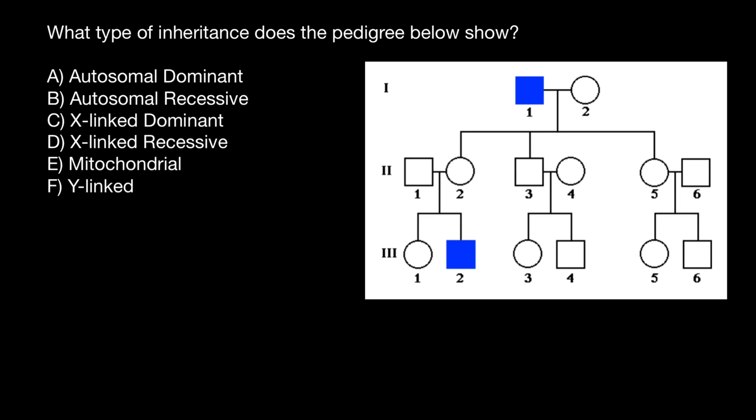Hello, and welcome to Nikolai's Genetics Lessons. Today's question is: what type of inheritance does this pedigree below show? Here's the pedigree, and here are the variants to choose from. What you see here can be explained with an X-linked recessive genetic disorder.